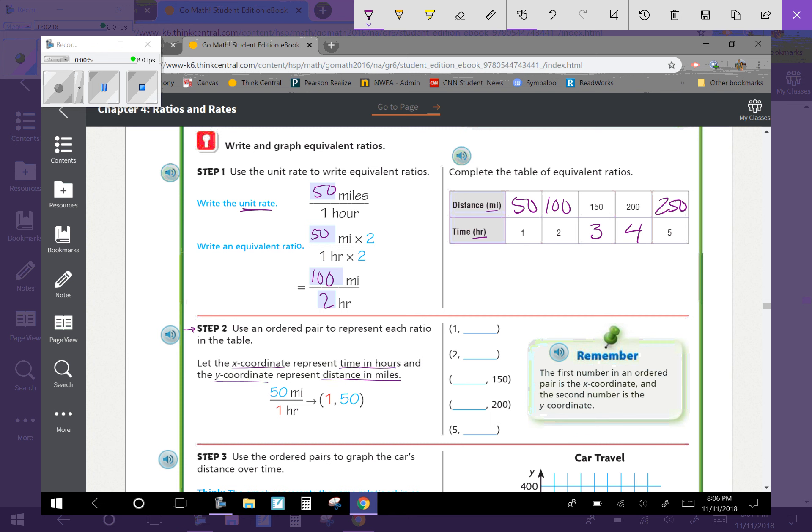All we're going to do here is this is going to be x and this is going to be y. We're just going to write these now as ordered pairs, taking them from the table and putting them in x, y form. For the unit rate, x is 1, y is 50. x is 2, y is 100. x is 3, y is 150. x is 4, y is 200. x is 5, y is 250.